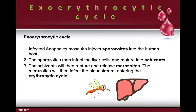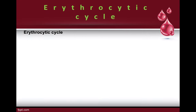In the exo-erythrocytic cycle, the Plasmodium is not yet inside the red blood cells — it's still outside. To recap: the Anopheles mosquito injects sporozoites into the human host; sporozoites travel to the liver and mature into schizonts; schizonts rupture and release merozoites; merozoites enter the bloodstream and infect the erythrocytes, starting the erythrocytic cycle.